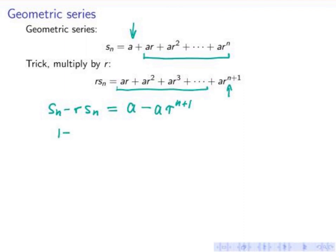So then I factor out 1 minus r on the left. S_n equals, and here I'll factor out the a: 1 minus r to the n plus 1.